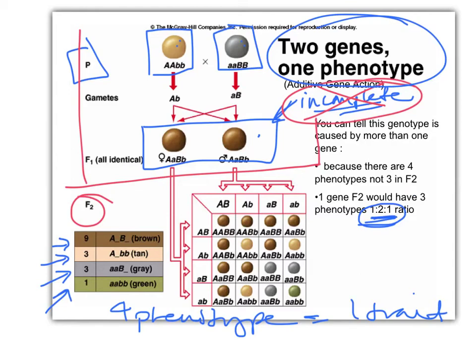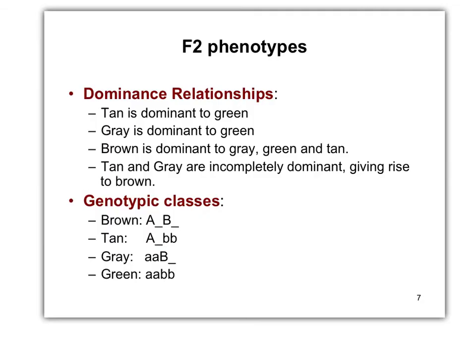Again, pattern recognition — 9:3:3:1 — except we're only talking about one thing: color, shape, height. Not two traits, just one. The dominance relationships among these F2 phenotypes: tan is dominant to green, gray is dominant to green, and brown is dominant over gray, green, and tan. As it turns out, both tan and gray are incompletely dominant to each other, giving us brown. Nine to three to three to one — one phenotype.